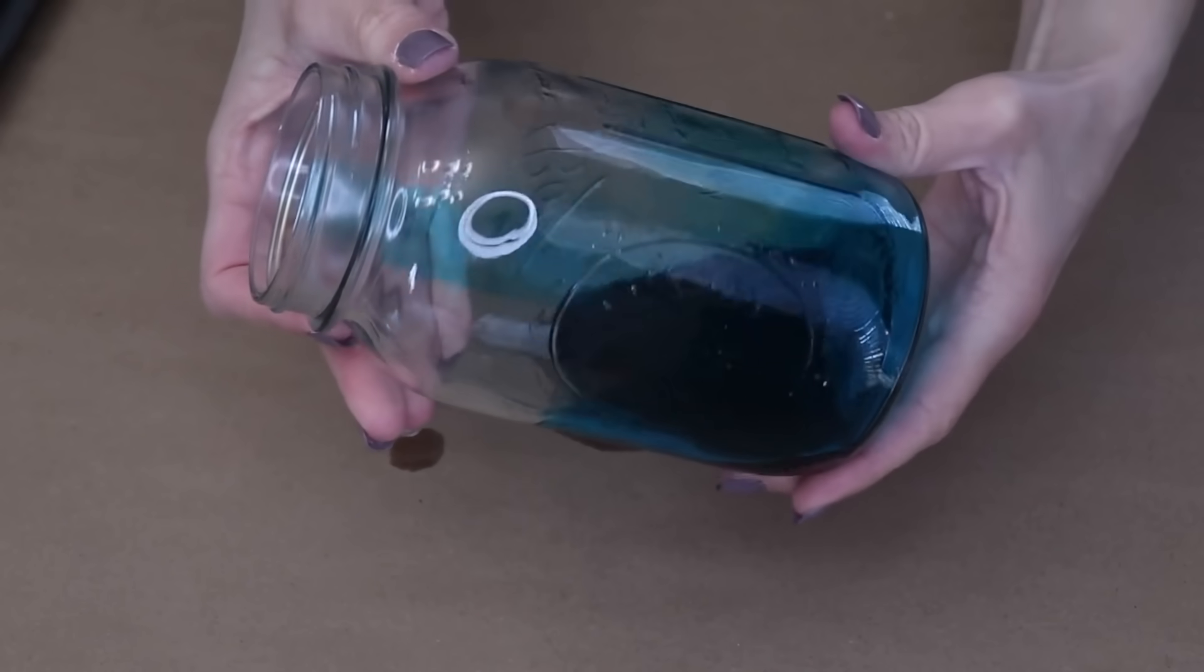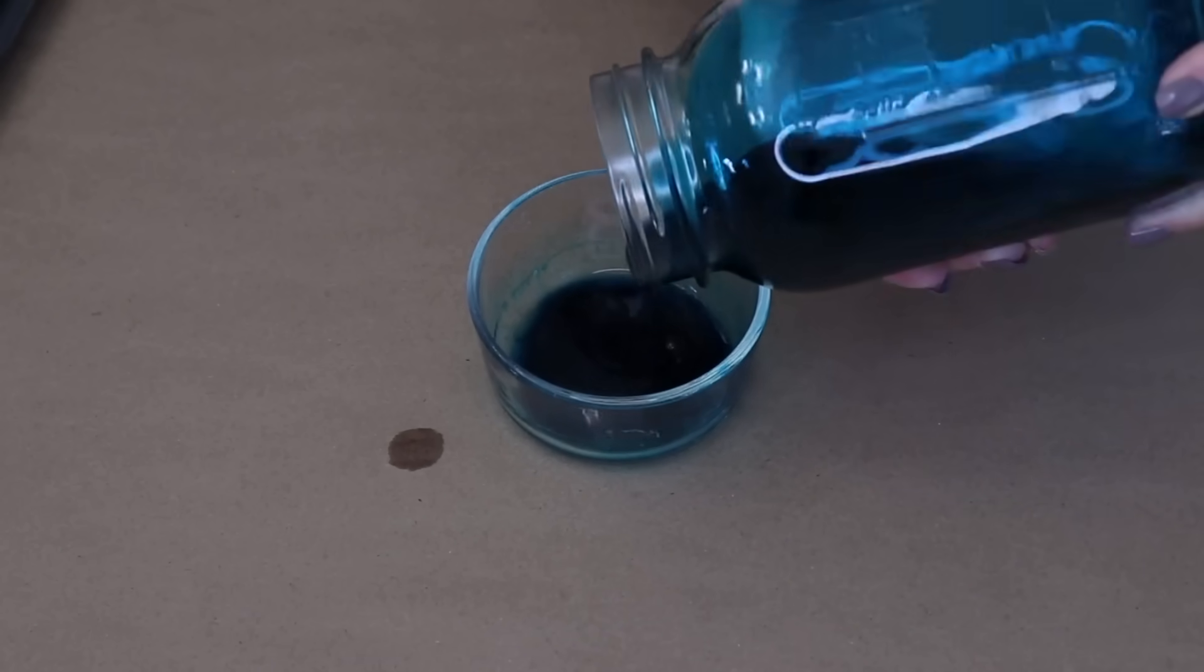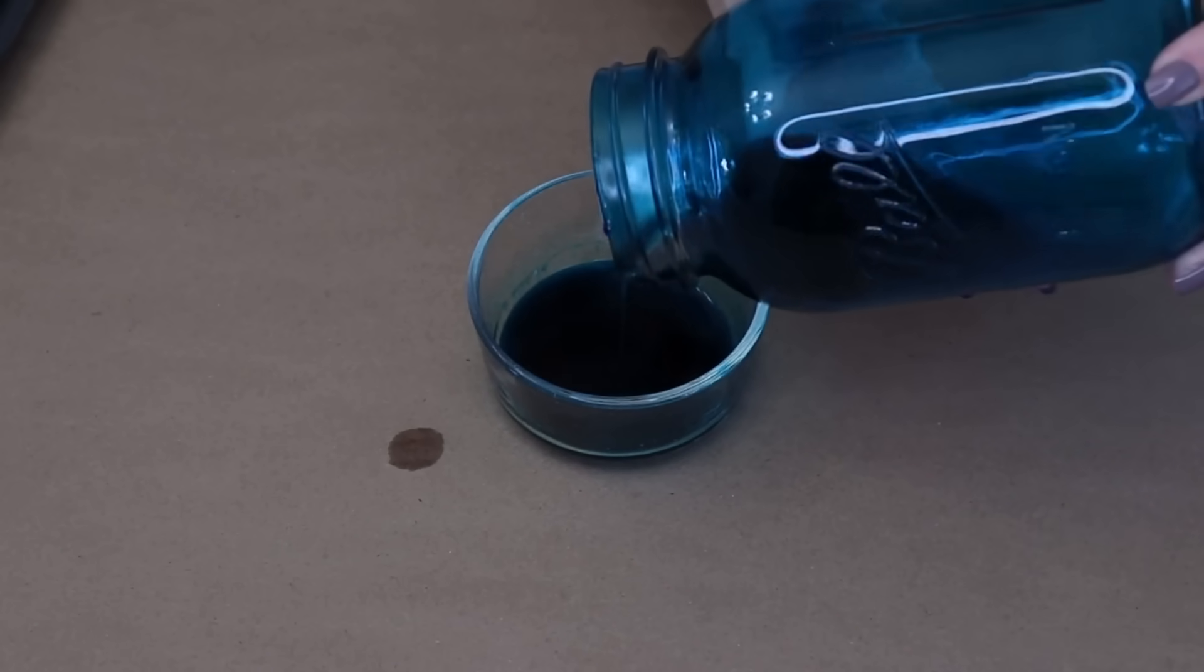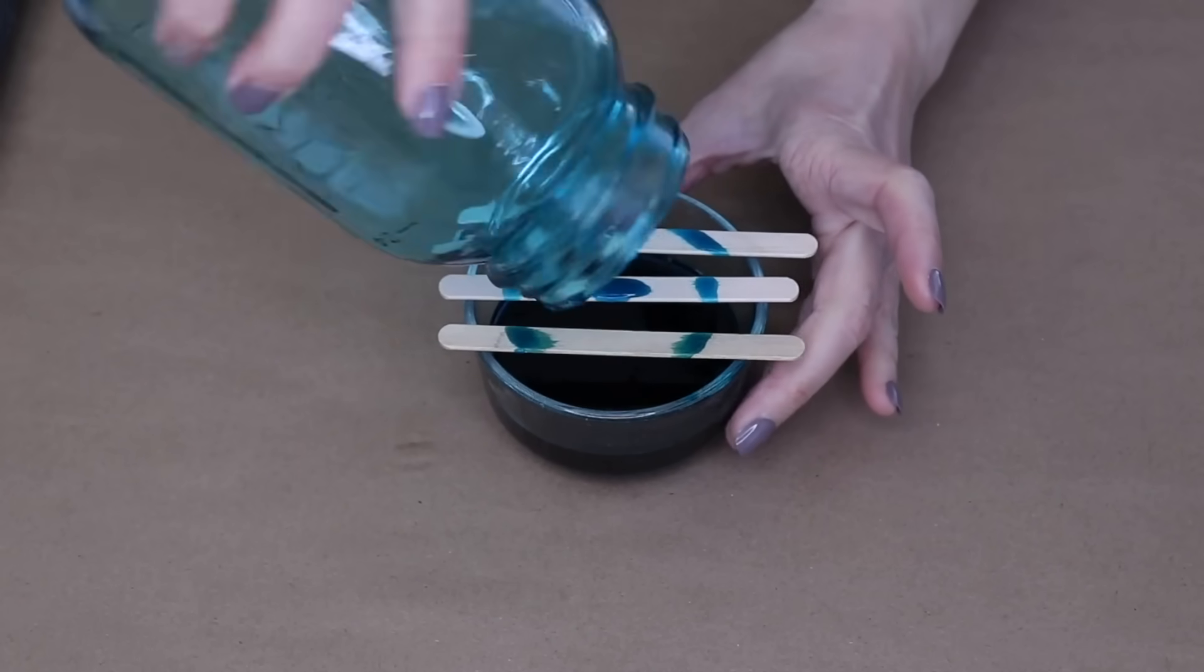Grab your mason jar, make sure it's nice and clean. Pour that dark blue mixture into the jar and swirl it around so it covers everything. Once you've swirled it all around, you can dump the excess back into the original container. Now we want to let this drip for a little bit. Let it drip for about 10 minutes.